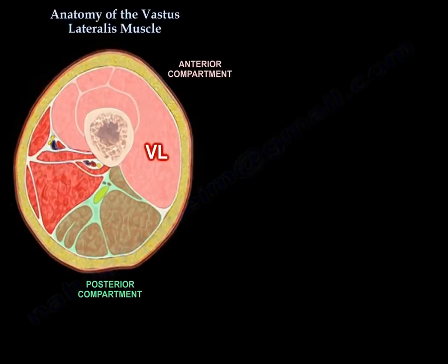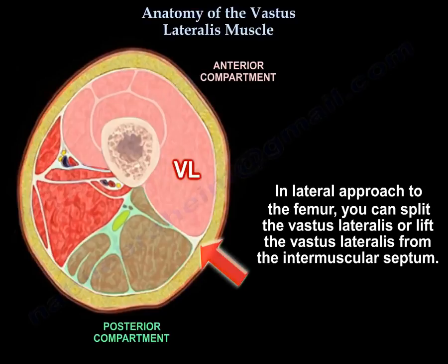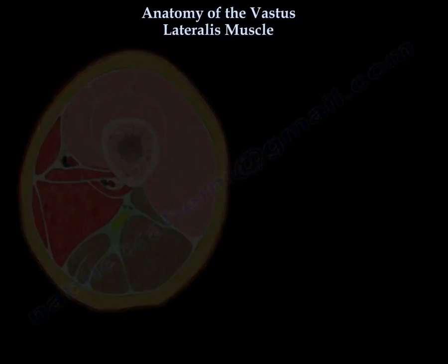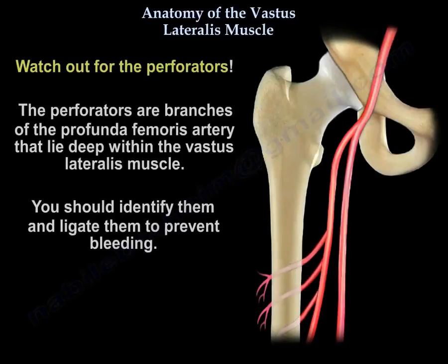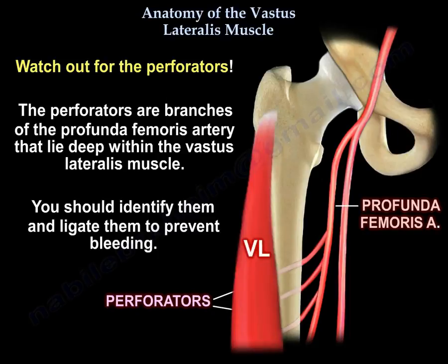In a lateral approach to the femur, you can either split the Vastus Lateralis or lift it from the intermuscular septum. Watch for the perforators — they are branches of the profunda femoris artery and lie deep within the Vastus Lateralis muscle. You should identify and ligate them to avoid bleeding.